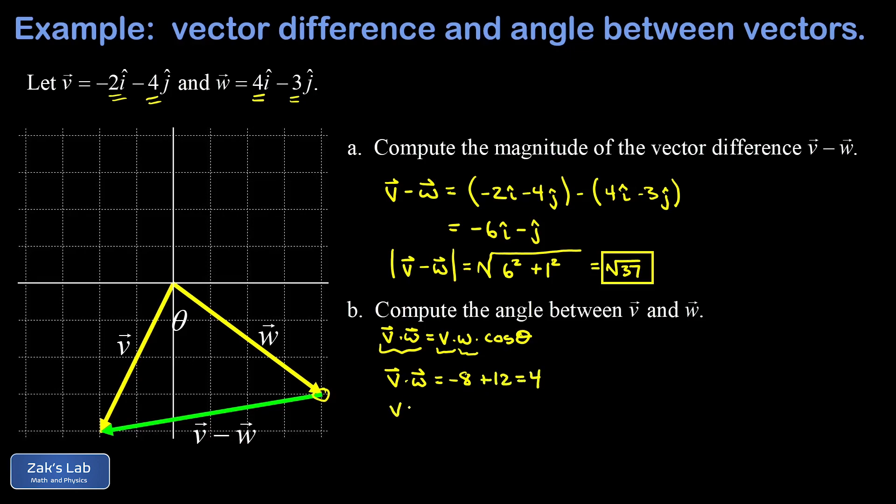Now I need the magnitude of v. Using the Pythagorean theorem, the x component has a length of 2, so 2 squared. The y component has a length of 4, so 4 squared. That gives me 16 + 4, which is 20. So I end up with √20. We could pull a factor of 2 out, but it's not that useful, so I'll leave it.